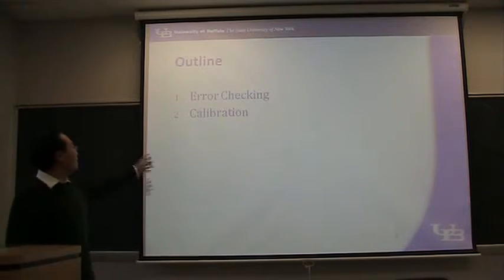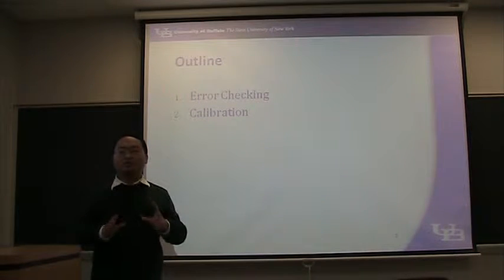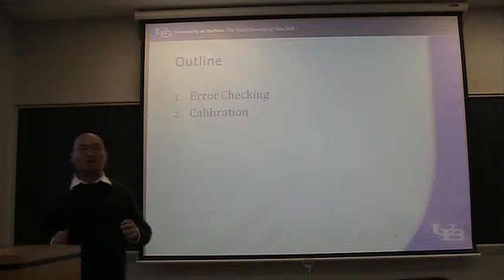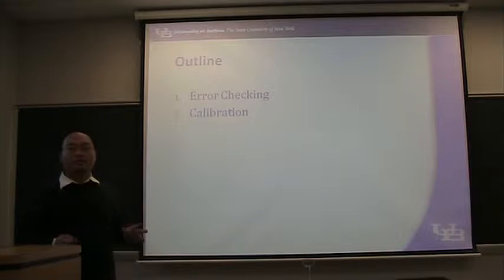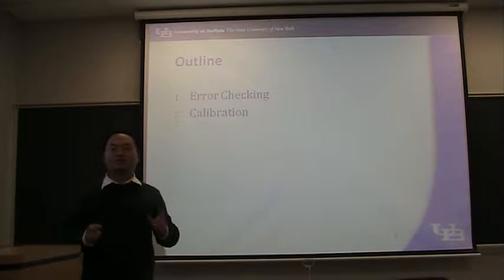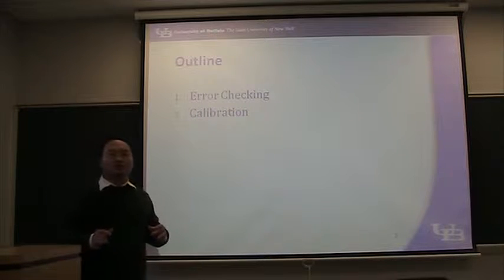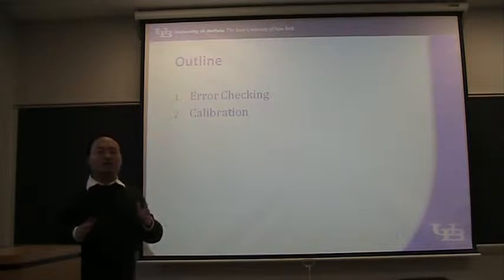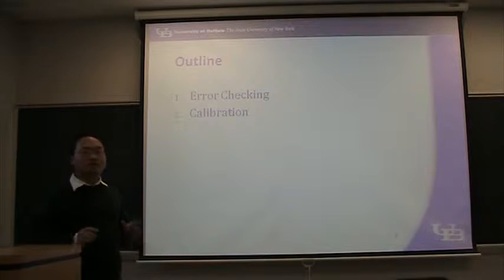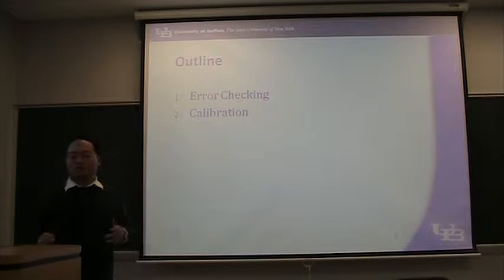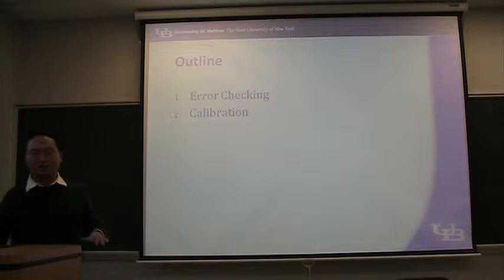The first part is error checking — that means you have to check the errors in your input. The second part is calibration, which means you have to adjust the parameters of the simulation model. In the simulation model, they typically provide some default parameters, and those parameters can be changed and calibrated.